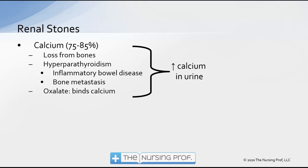75 to 85 percent of stones come from calcium. There's an increase in the amount of calcium in the urine as a result of loss from the bones, which could be caused by hyperparathyroidism, inflammatory bowel disease, or bone metastasis, and oxalate. Oxalate binds calcium and causes these stones to form. So high oxalate diets also contribute to the formation of a calcium stone — it's not the oxalate causing the problem, but it contributes by binding the calcium together.